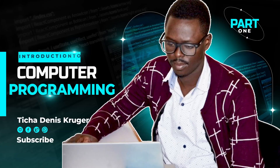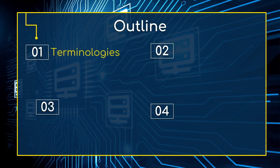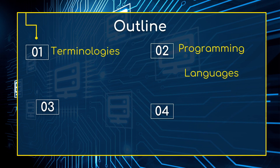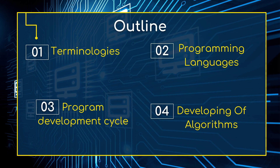So let's get started. Today we're covering introduction to computer programming, and we're going to look at terminologies used in computer programming. We'll look at computer programming languages, then discuss the program development cycle, and finally we'll look at how to develop algorithms.